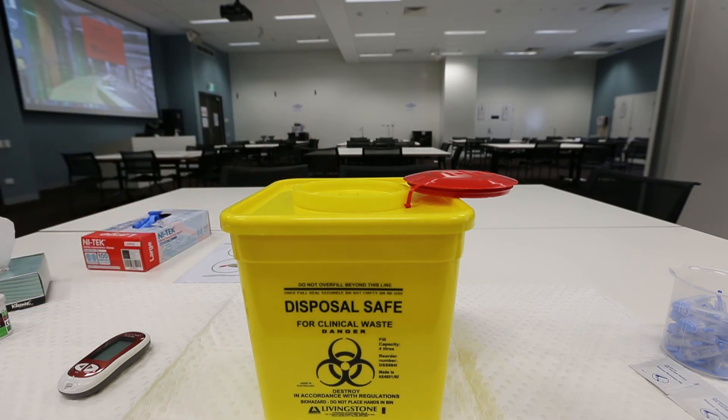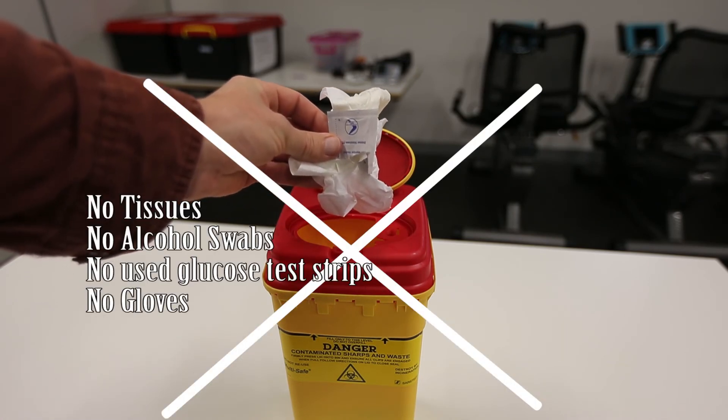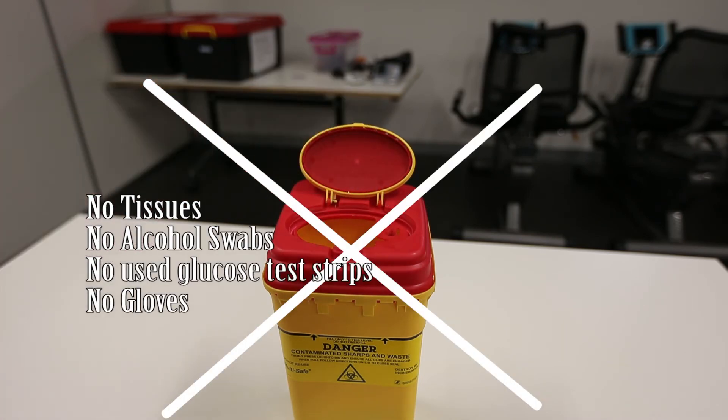Place your used lancet into the yellow sharps bins. Now there are three things to note. Firstly, please don't put any tissues, alcohol swabs, used glucose test strips, or gloves into the yellow sharps bins. Only your used lancets.